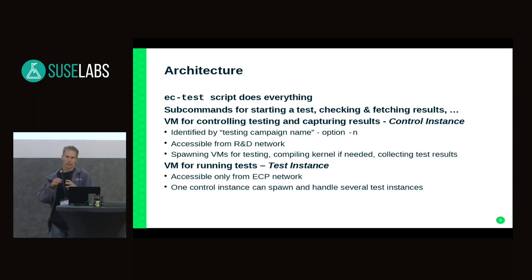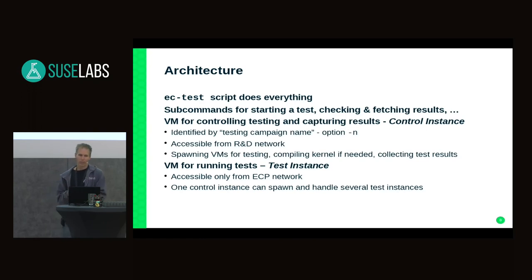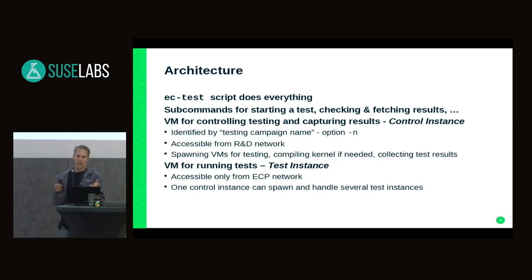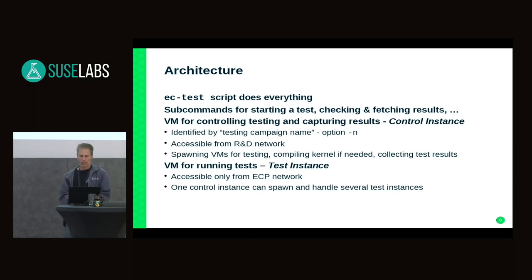When you start the test, there is something called a control instance — a virtual machine inside the engineering cloud used for starting other VMs that do the actual testing and deploying kernels to them. It also captures results from the test VMs. This is because the cloud is in Provo and the network connection is occasionally flaky or has high latency, so it's simplest to fetch results to another instance in the cloud, then fetch to your local machine when you have good connectivity. The control instance is identified by a testing campaign name specified with the minus n option, and one control instance is enough for all the testing you do.